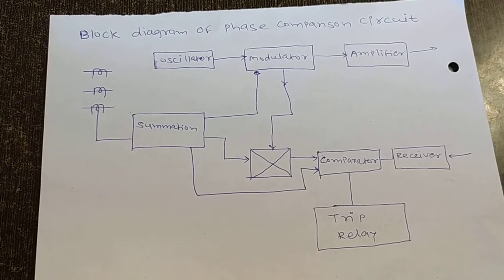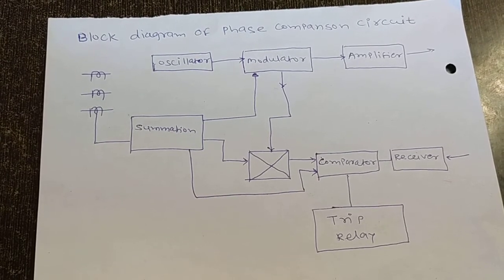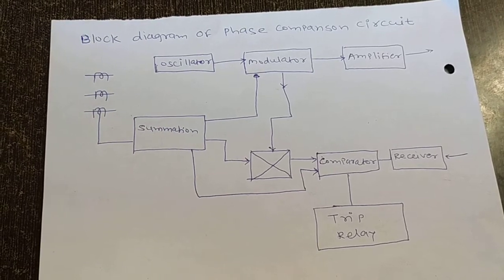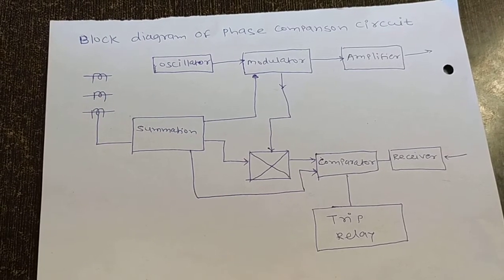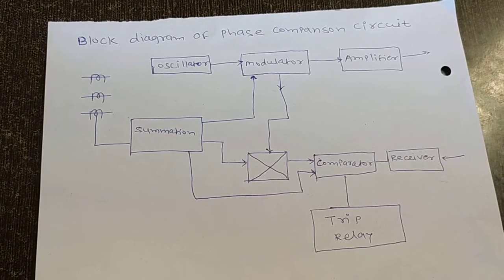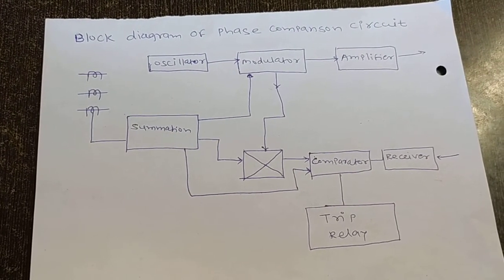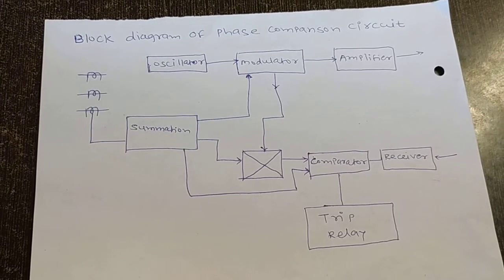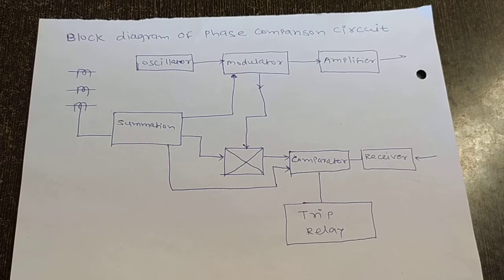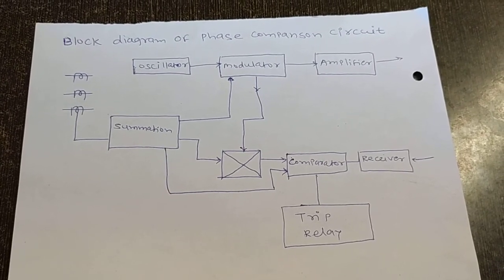As seen in the image, the current is taken from the sending end through the CT secondaries and given to the comparator through a summation unit. From the receiving end, the signal is also taken and fed to the comparator. The comparator takes these two signals, compares the phase difference, and if a phase difference occurs, it sends a signal to the relay. This completes the phase comparison circuit for protection of the transmission line.